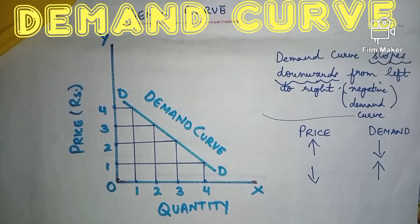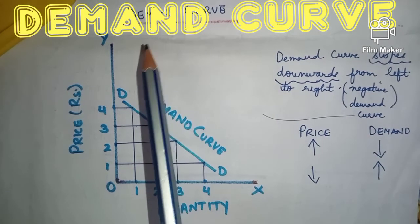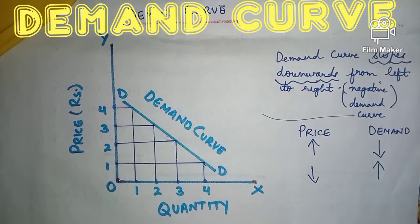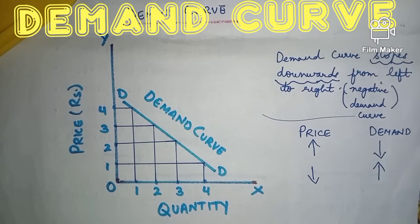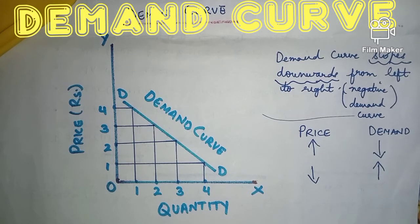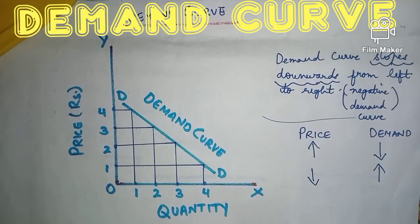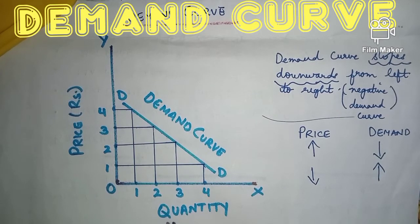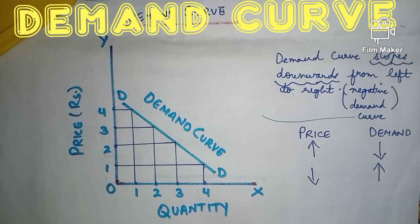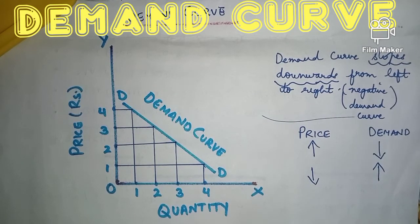Now we'll do the demand curve. What is a demand curve? A demand curve is a curve that expresses the relationship between different quantities demanded at different possible prices of a commodity. This is the individual demand curve. What is an individual demand curve? An individual demand curve is one that represents a single consumer's demand at different prices.